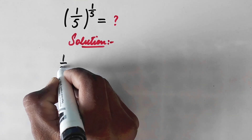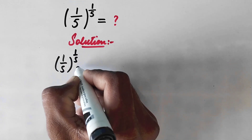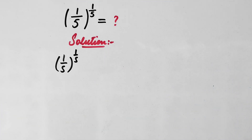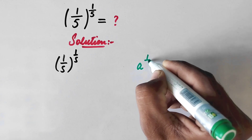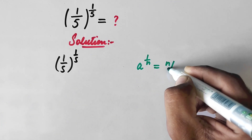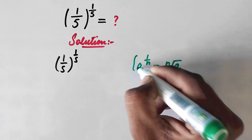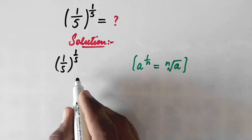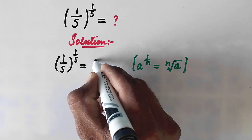Here we will rewrite the original expression (1/5)^(1/5) and apply the radical property: a to the power 1/n is equal to the nth root of a. Following this property, (1/5)^(1/5) can be written as the fifth root of (1/5).